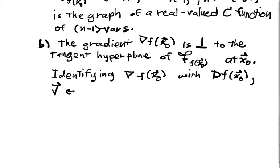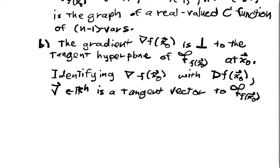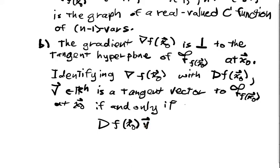our gradient at x₀ with the Jacobian f at x₀, v in Rⁿ is a tangent direction or tangent vector to the level set at x₀ if and only if we have that df at x₀ times v, so our Jacobian multiplied by v, is the zero vector.